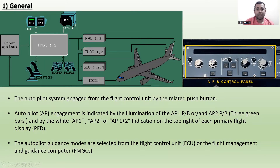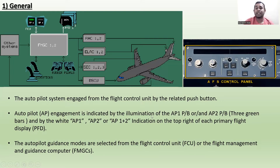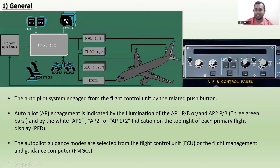The autopilot system engages from the Flight Control Unit by the related push button — autopilot one and autopilot two. This is the auto flight system control panel. Autopilot AP engagement is indicated by the illumination of the AP1 and AP2 push buttons showing three green bars, and by the white AP1, AP2, or AP1+2 indications on the top right of each Primary Flight Display unit.